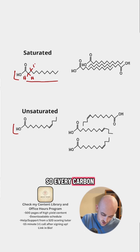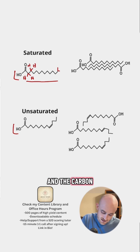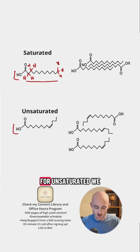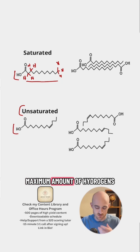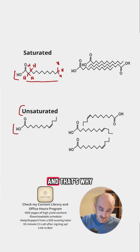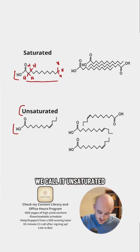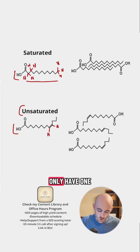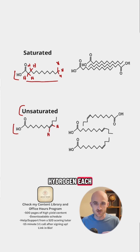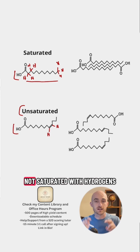So every carbon here has two hydrogens on it, and the carbon at the end has three hydrogens on it. For unsaturated, we don't have the maximum amount of hydrogens, and that's why we call it unsaturated. So this double bond here — the carbons involved in that only have one hydrogen each, so they are not saturated with hydrogens.